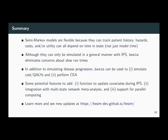To summarize, semi-Markov models are very nice because of their flexibility and ability to track patient history — hazards, costs, and utility can all depend on time in the health state, not just on model time. They can only be simulated in a general manner with individual level simulation. HESIM largely eliminates concerns about slow run times. It's also nice because after simulating disease progression, you can use it to simulate costs and utilities and directly perform CEA.